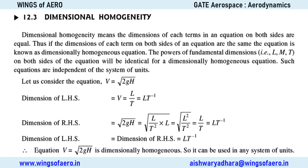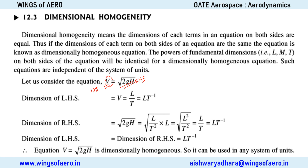Moving to dimensional homogeneity: whatever equations you have, they must satisfy dimensional homogeneity. For example, V equals root over of 2GH. If I find the dimensions of both the left-hand side and right-hand side separately, both should be balanced. That means both sides should have L T minus 1. Only then will it satisfy dimensional homogeneity.